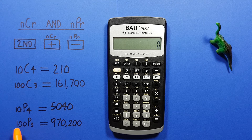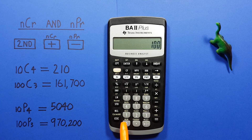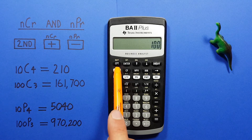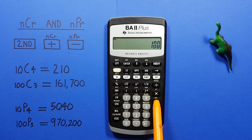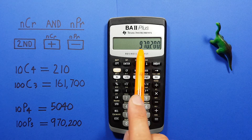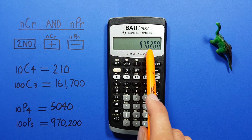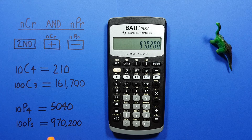Again, if we have 100 choose 3 permutations, we start by entering the 100, second function minus 3, and hit equals, and we see we get 970,200 possible permutations for 100 choose 3.